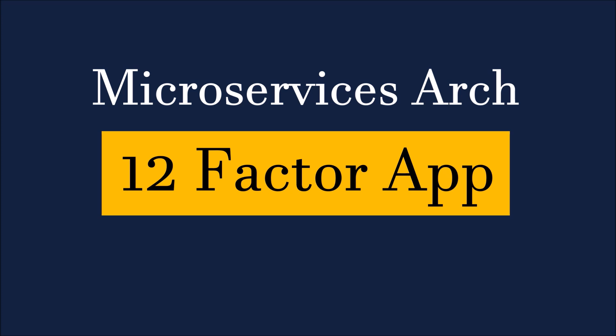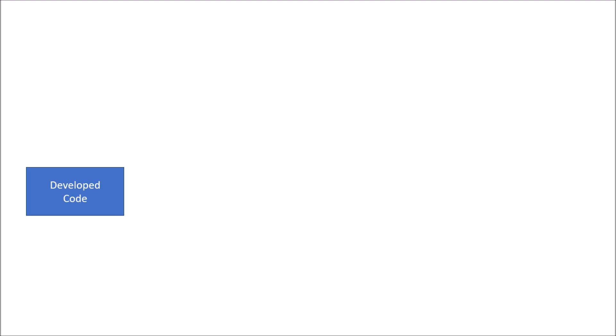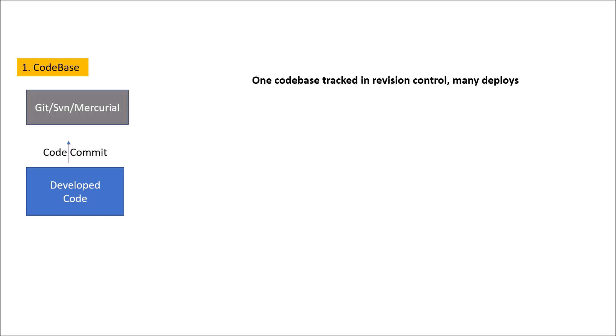Let's start with the first factor: codebase. Suppose you have developed code. In a project, you need to let other team members know about this code, so you need a codebase — meaning a repository. This codebase principle says: one codebase tracked in revision control, and many deploys. The developed code is committed to a repository, which could be Git, SVN, or Mercurial depending on the project requirement.